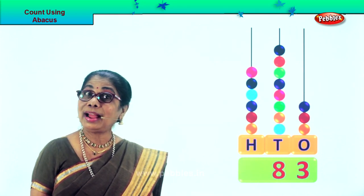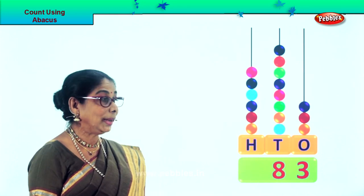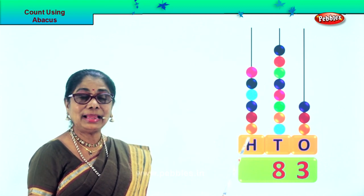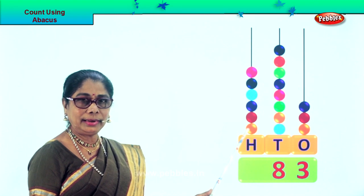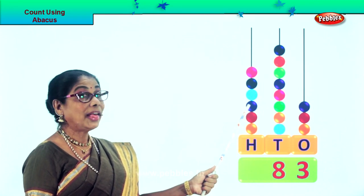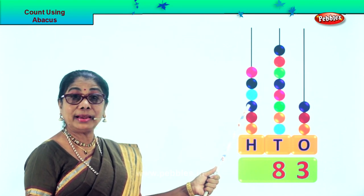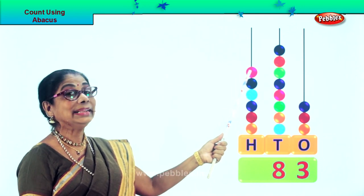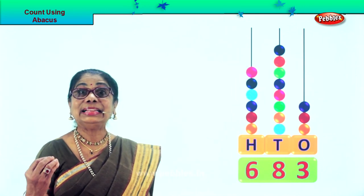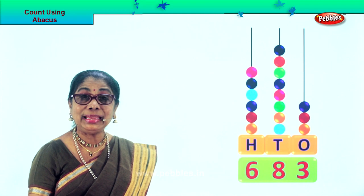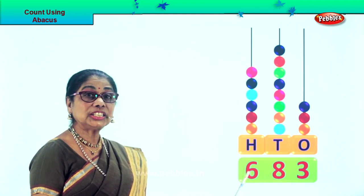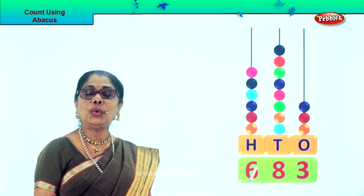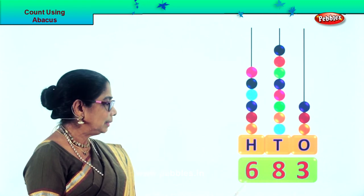Now we go to the 100s place. Count in 100 — every beat is 100: 100, 200, 300, 400, 500, 600. There are 6 beats, each is 100, so we put down number 6.